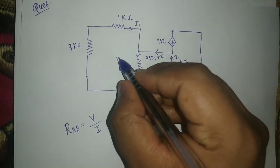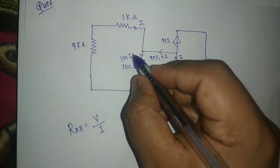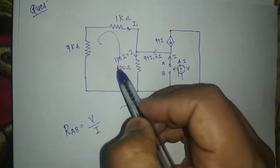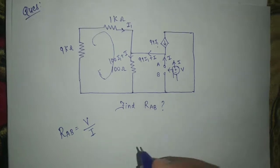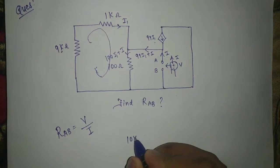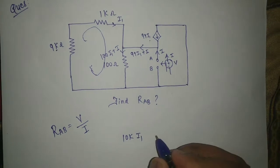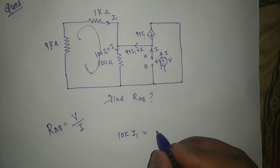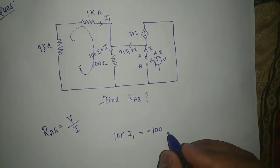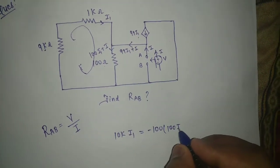So here current is 100 I1 plus I. So apply KVL in this loop. So 9K plus 1K is 10K. 10K I1 is equal to minus 100 ohm and current throw is 100 I1 plus I.